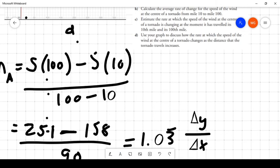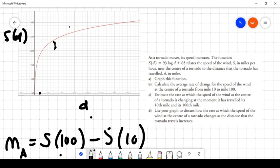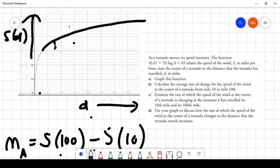And now the final question here is use your graph to discuss how the rate at which the speed of the wind at the center of the tornado changes as the distance increases. So what we see is clearly from the graph, as the distance traveled goes up, as we go further to the right, the speed of the tornado goes up as well. It keeps going up, but it goes up at a decreasing rate. So it still continues to increase, but you can see that the slope of the line does not get steeper and steeper. It kind of levels off. So our answer to that question is, as the tornado travels, the speed at the center of the tornado increases, but it does so at a decreasing rate.